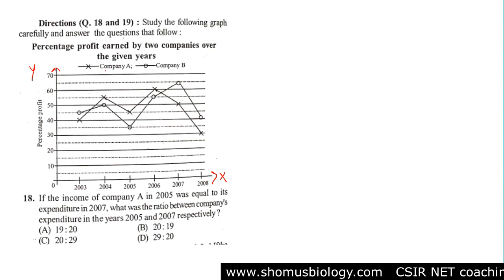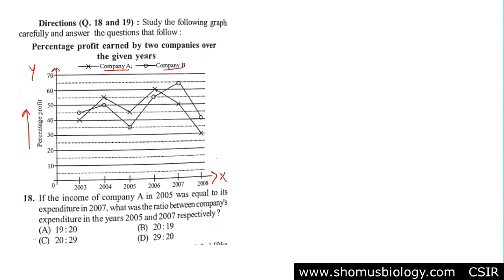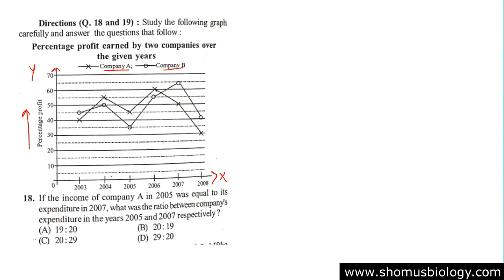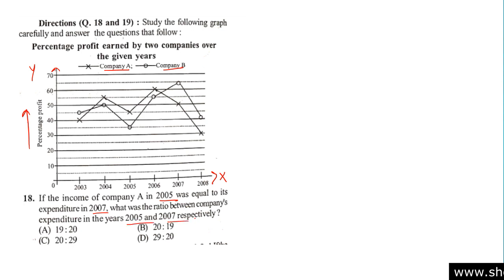In this case you can see there are two companies: Company A marked with a cross and Company B marked with a circle. On the x-axis are the number of years, and on the y-axis is percentage profit, from year 2000 to 2008. The question states: if the income of Company A in 2005 was equal to its expenditure in 2007, what was the ratio between the company's expenditure in years 2005 and 2007 respectively?